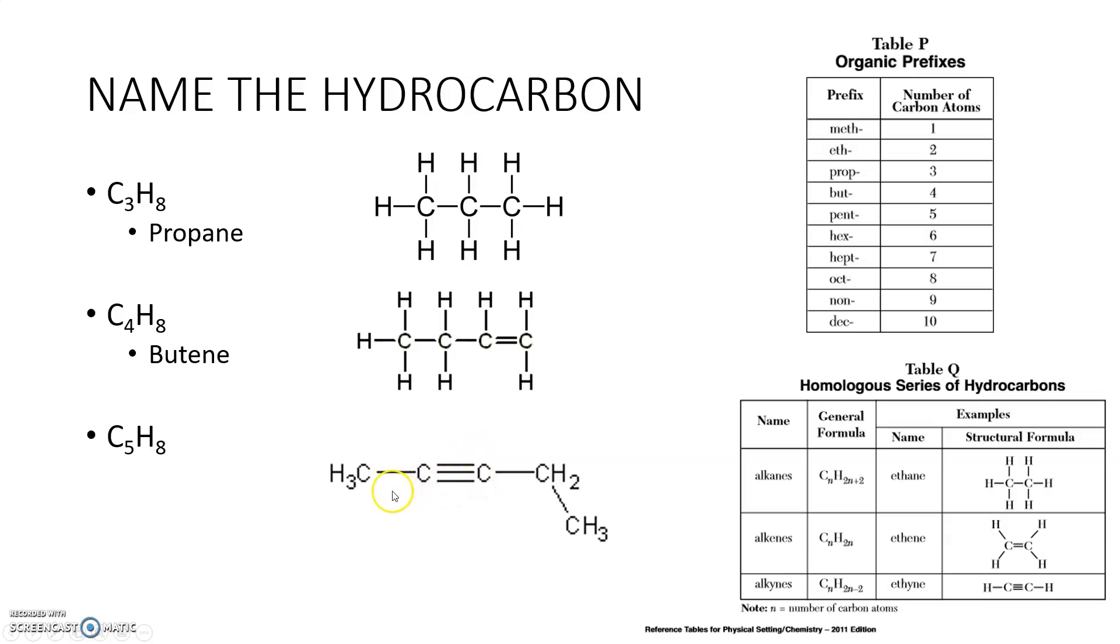I know right away this is an alkyne with one, two, three, four, five carbons. So I come over here to table P. Five carbons, that prefix is pent. End with the alkyne ending of Y-N-E. And this guy's name is pentyne.